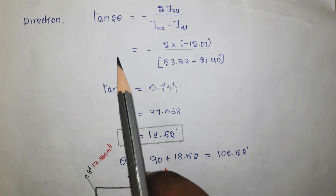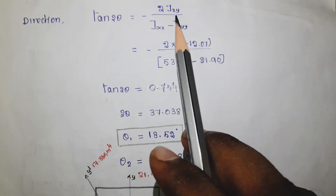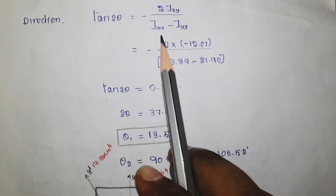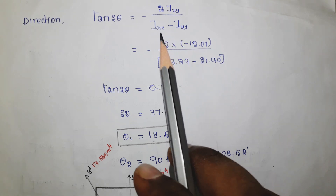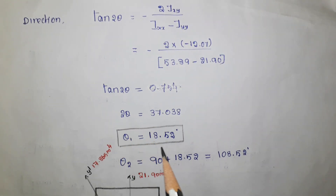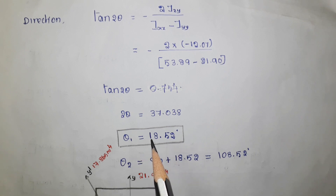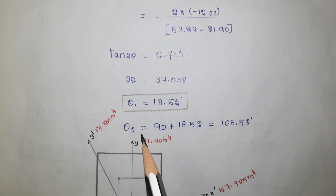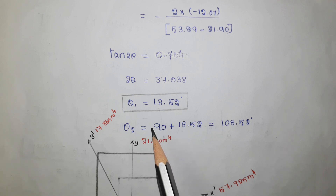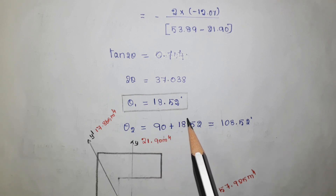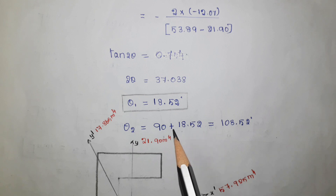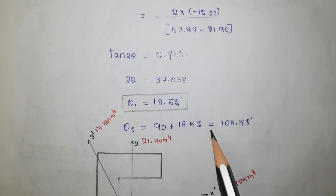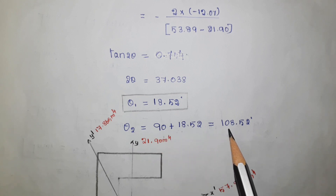The direction is found using: tan(2θ) equals minus 2·Ixy divided by (Ixx minus Iyy). Substituting the values, theta1 equals 18.52 degrees, which is the angle for the maximum principal moment of inertia. The minimum principal moment of inertia is located exactly 90 degrees from the maximum, so the answer is 108.52 degrees.